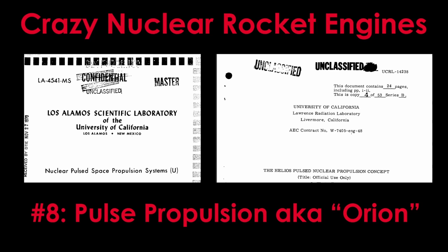Welcome to Crazy Nuclear Rocket Engines Number 8, Pulse Propulsion, otherwise known as Orion, which is a great example of the old saying, if all you have is a hammer, everything looks like a nail. I've included the title pages from two different documents that explore this concept, just to show that it wasn't just a crazy idea somebody came up with. It was a crazy idea that many people researched and discussed seriously.